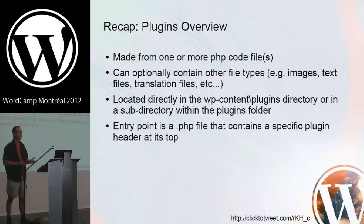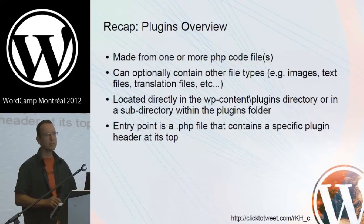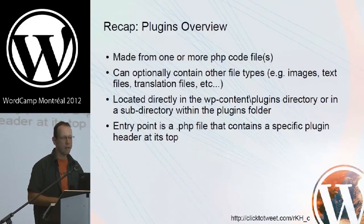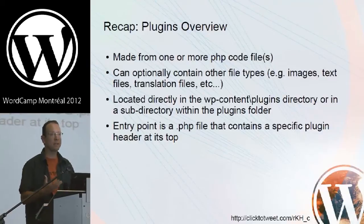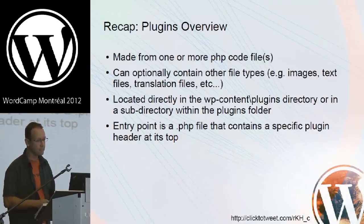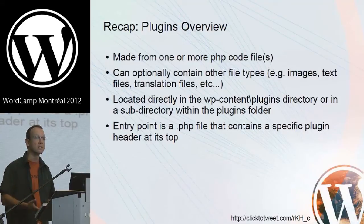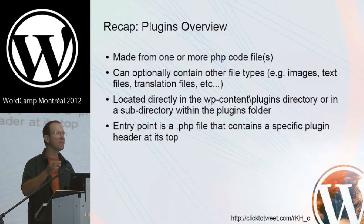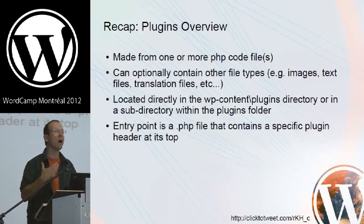What makes up a plugin? A plugin is made up of one or more PHP code files. They can also contain images, text files, and translation files — a lot of things next to that core PHP code file. Plugins are located under wp-content/plugins. The basic entry point for any plugin is a PHP file that has a specific piece of text at the top of its code.